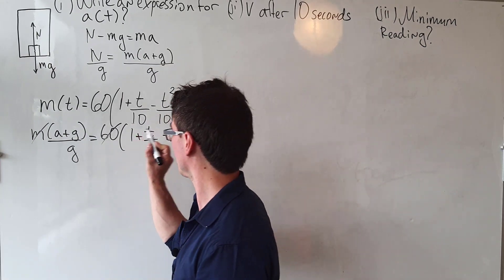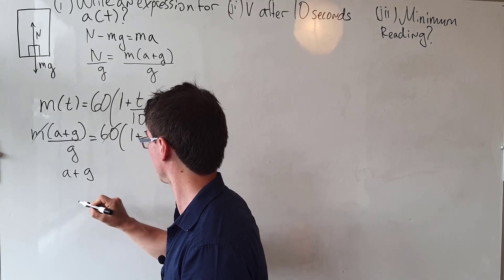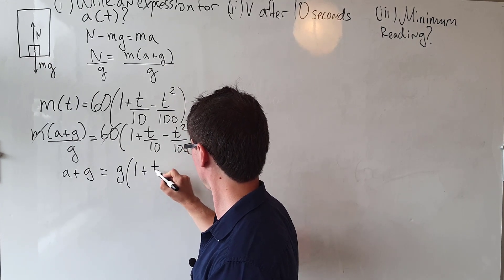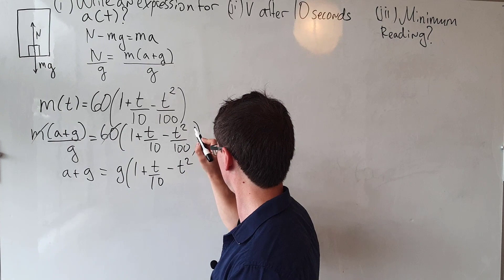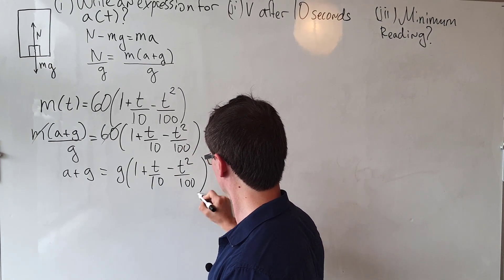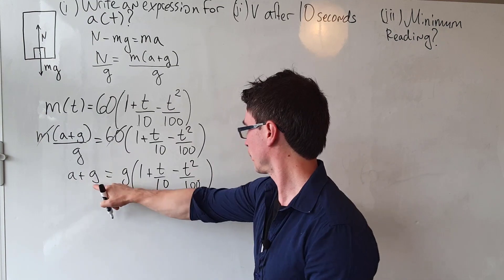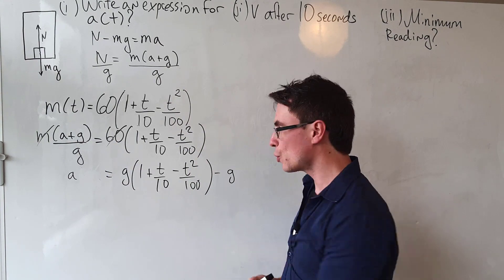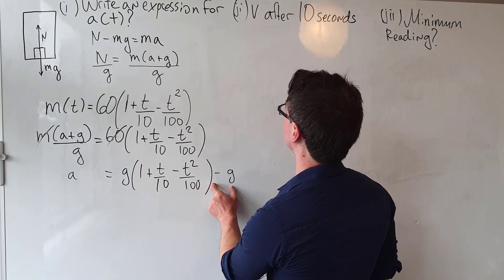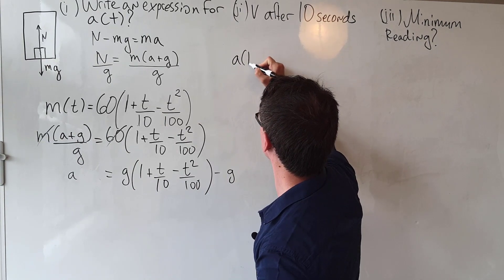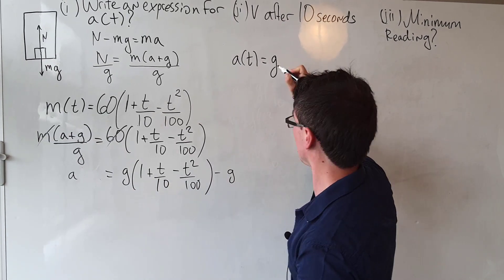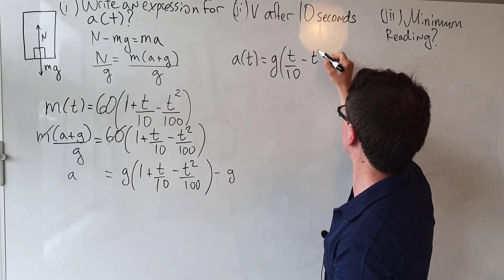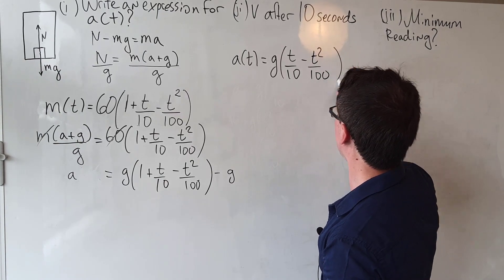All we need to do is rearrange for the acceleration. We get a plus g equals g times (1 + t/10 − t²/100). Taking the factor of g to the other side, the g's cancel, and our final expression for the acceleration as a function of time is: a(t) = g(t/10 − t²/100).